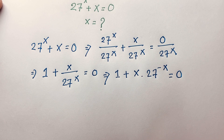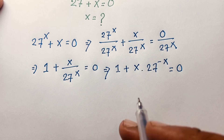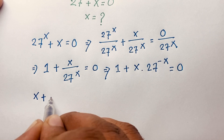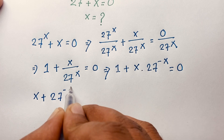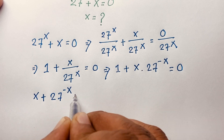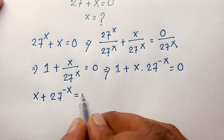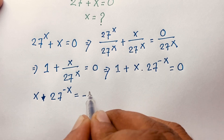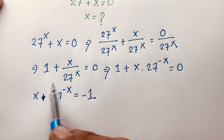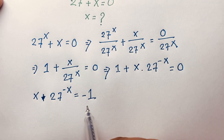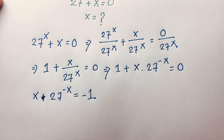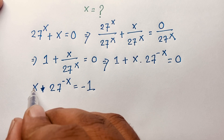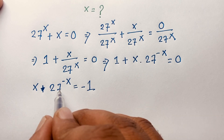So the expression becomes x · 27^(-x) = -1. I move the positive 1 to the other side, making it negative 1. Now at this moment I can see this expression has x and 27^(-x).